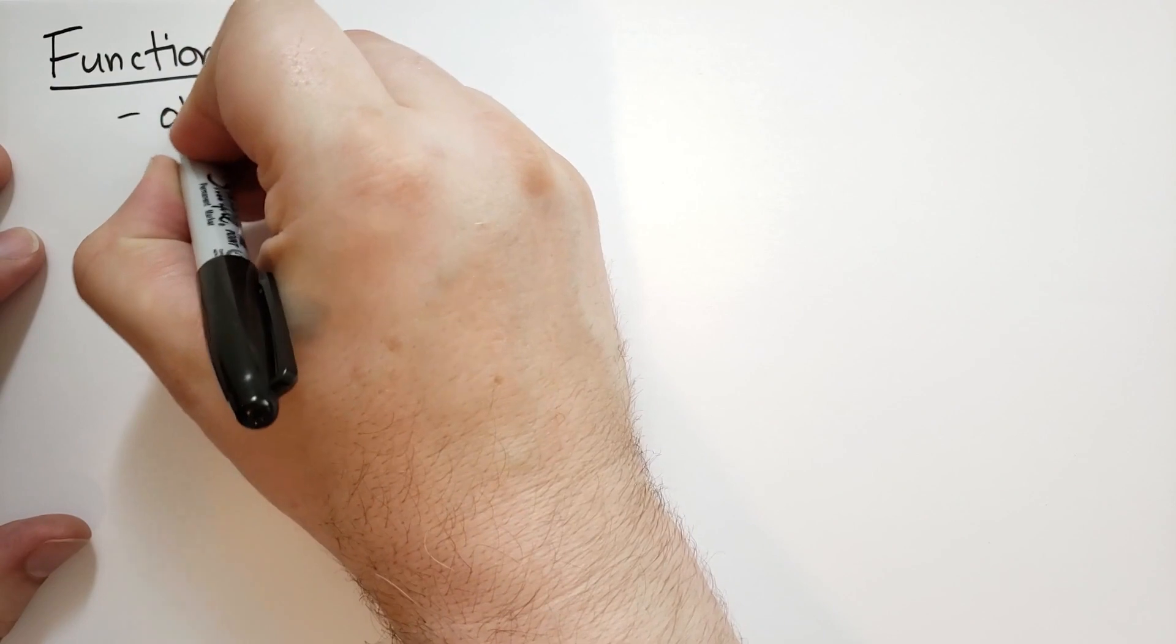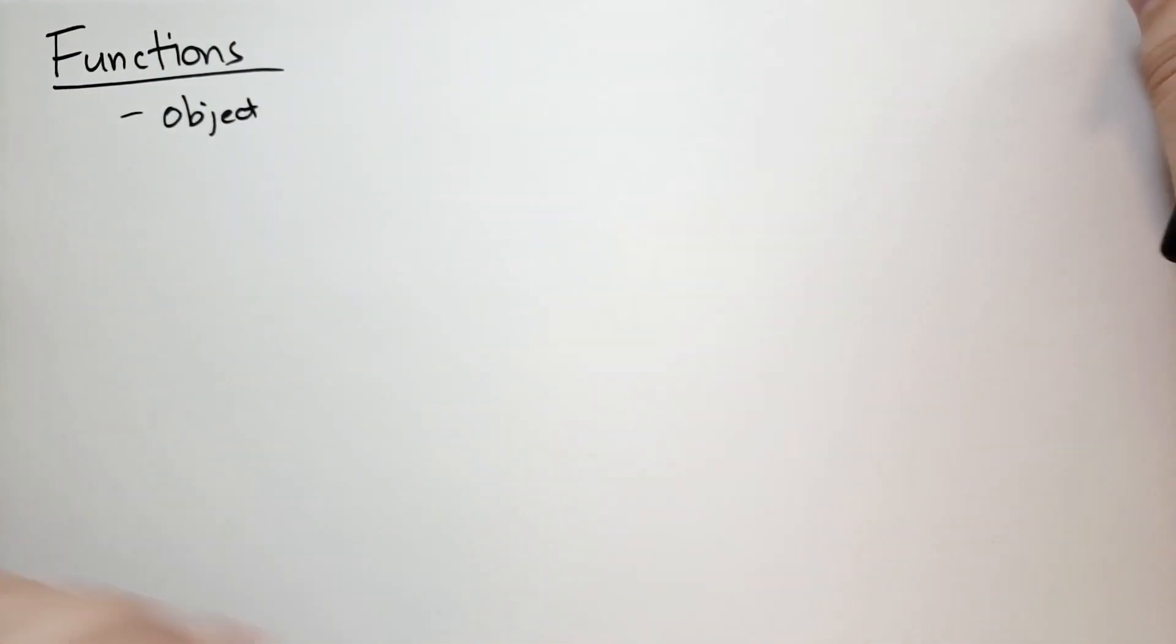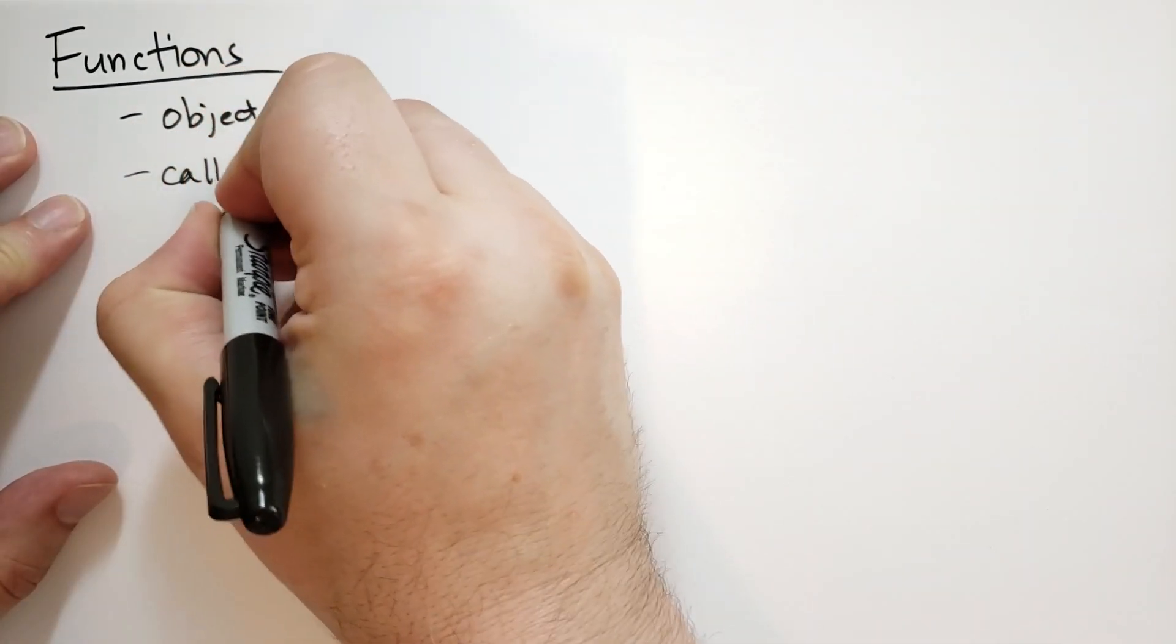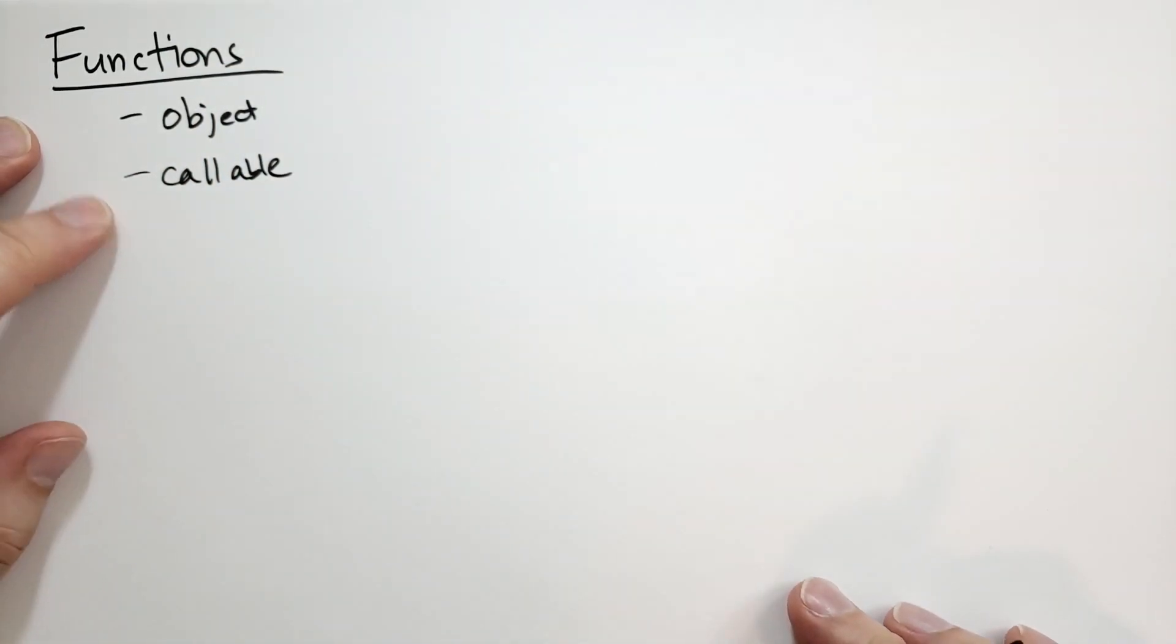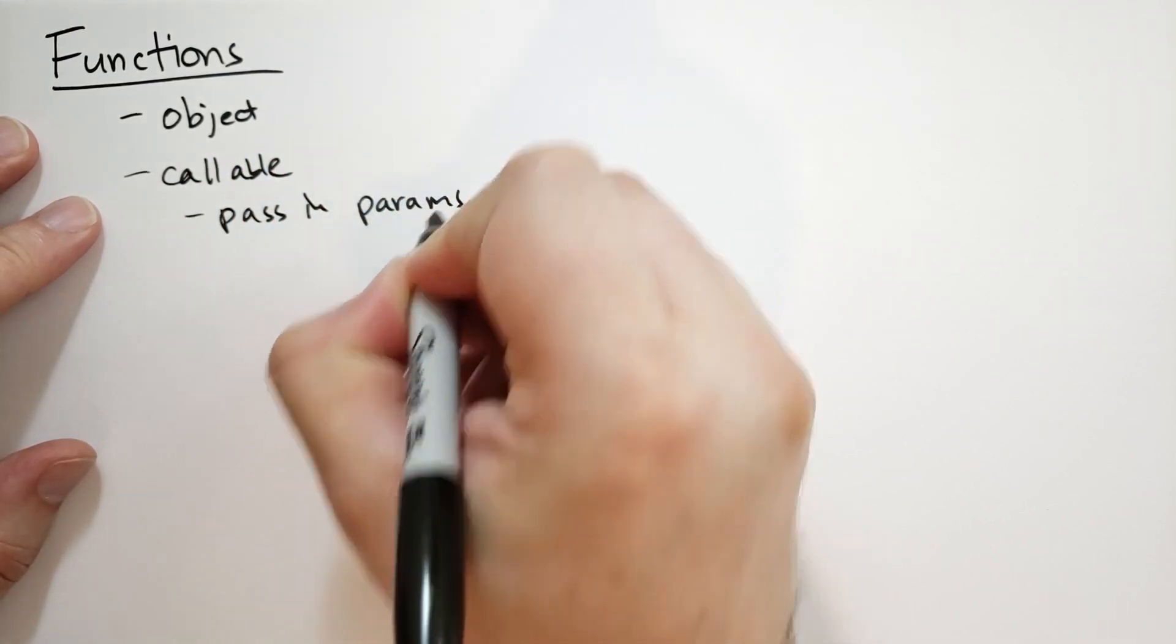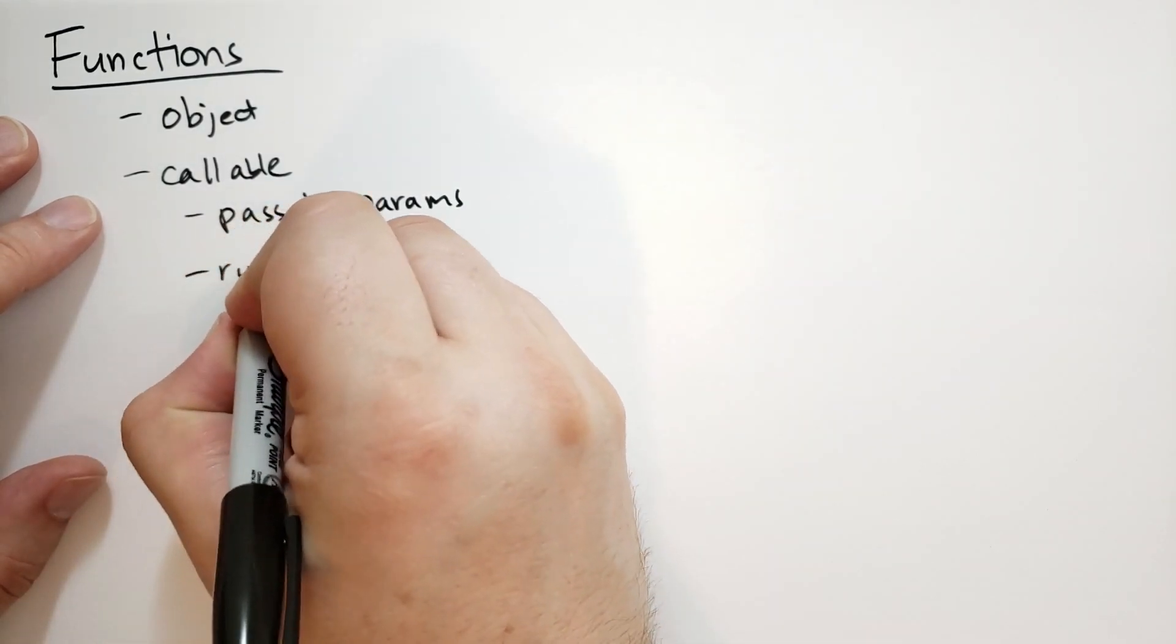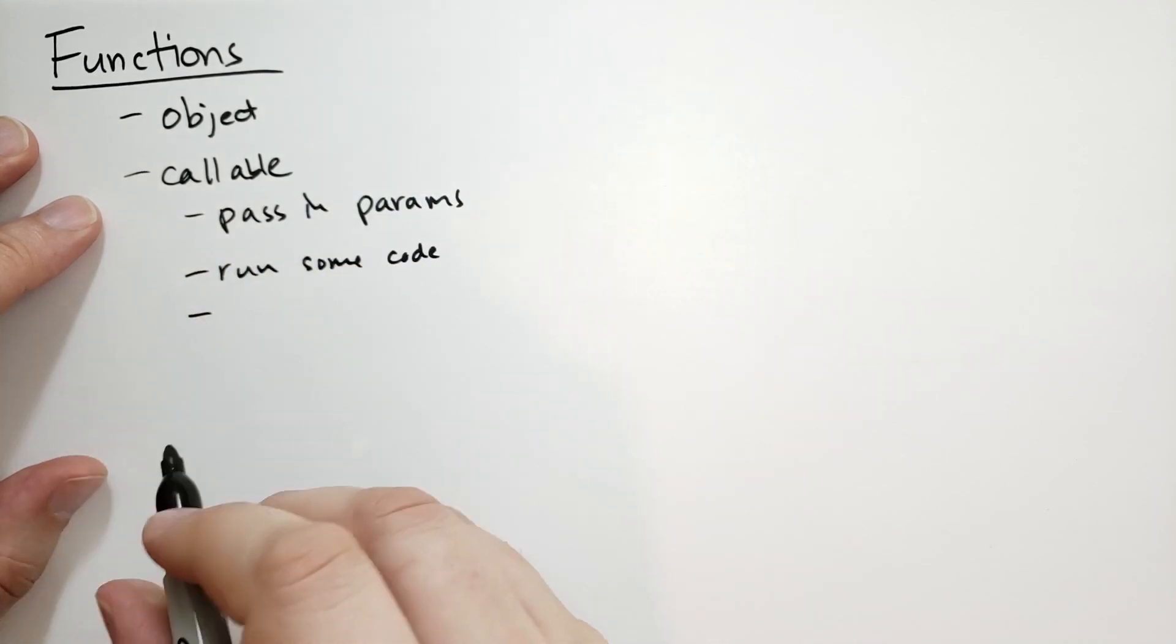So functions are an object, and there's actually many different types of function types. We're not going to really get into that right now and try to confuse you. They are callable. We'll talk about how to call functions in a minute. And when you call them, you're going to pass in some parameters. And then it's going to run some code, and then it's going to give you some kind of result.